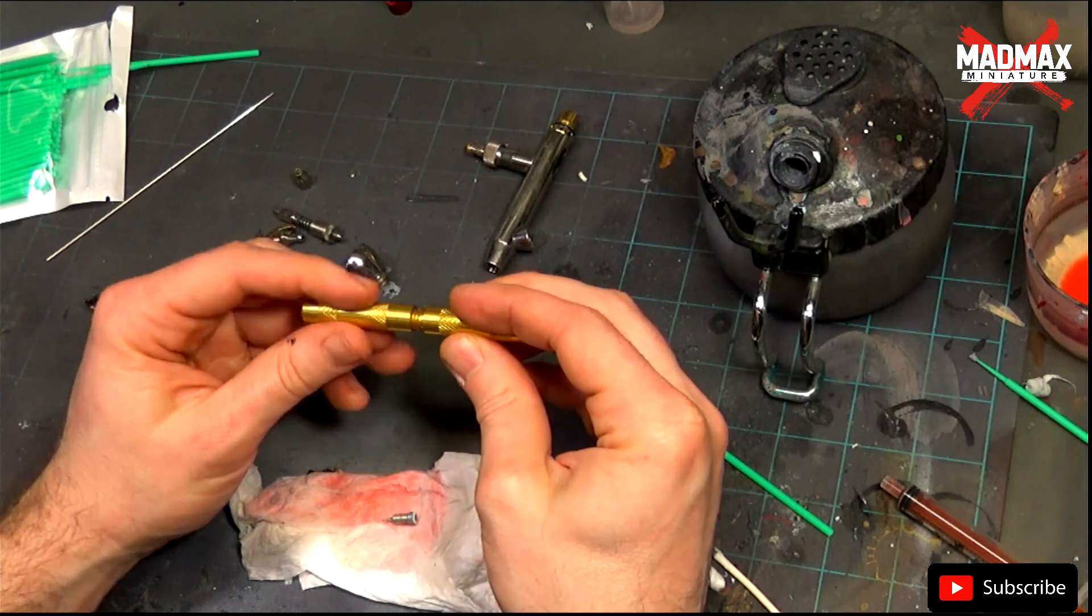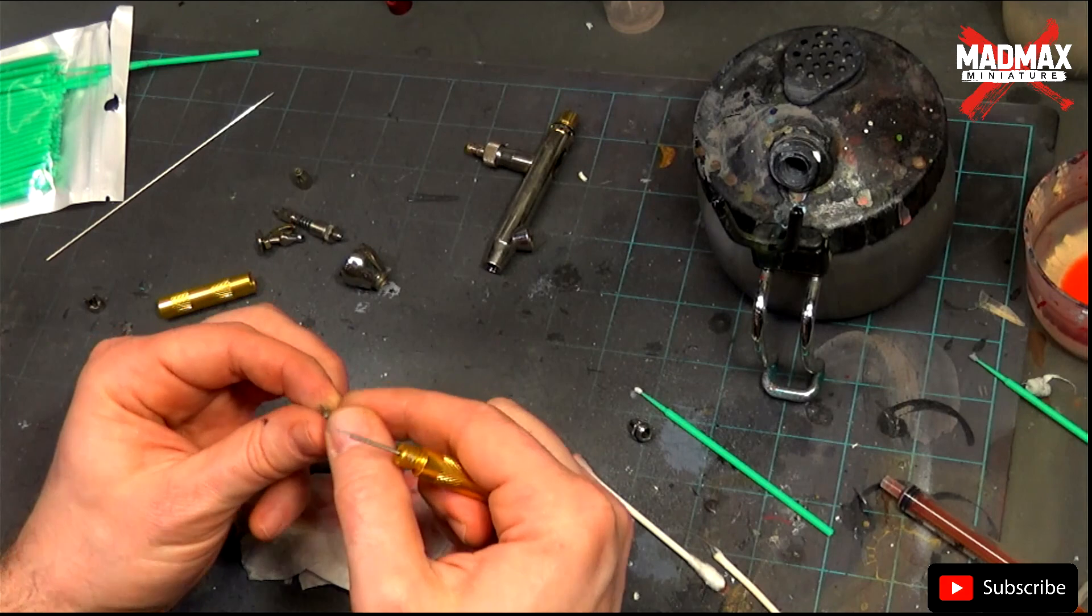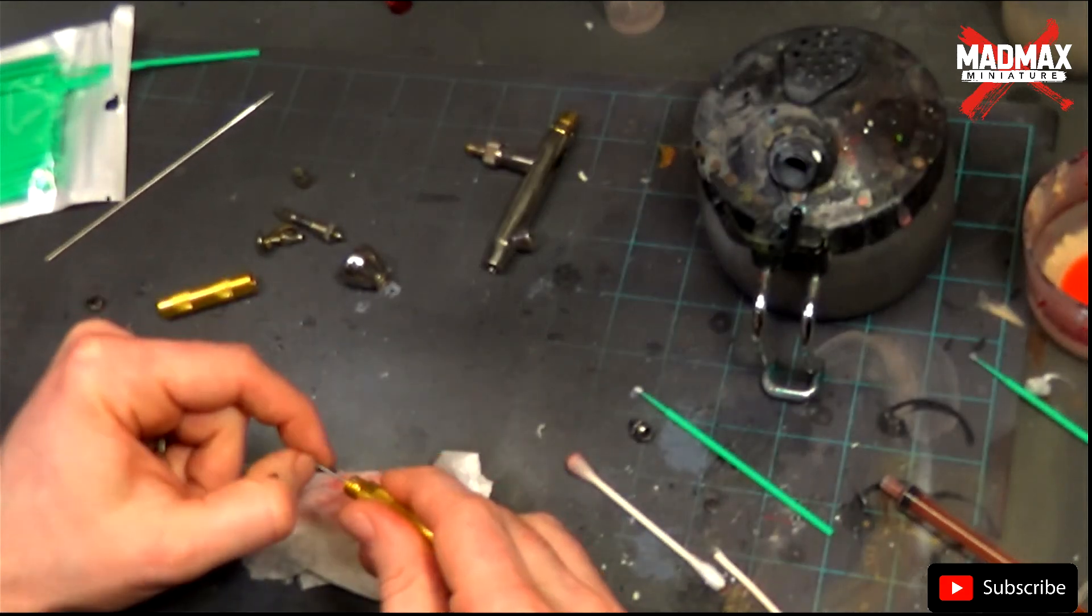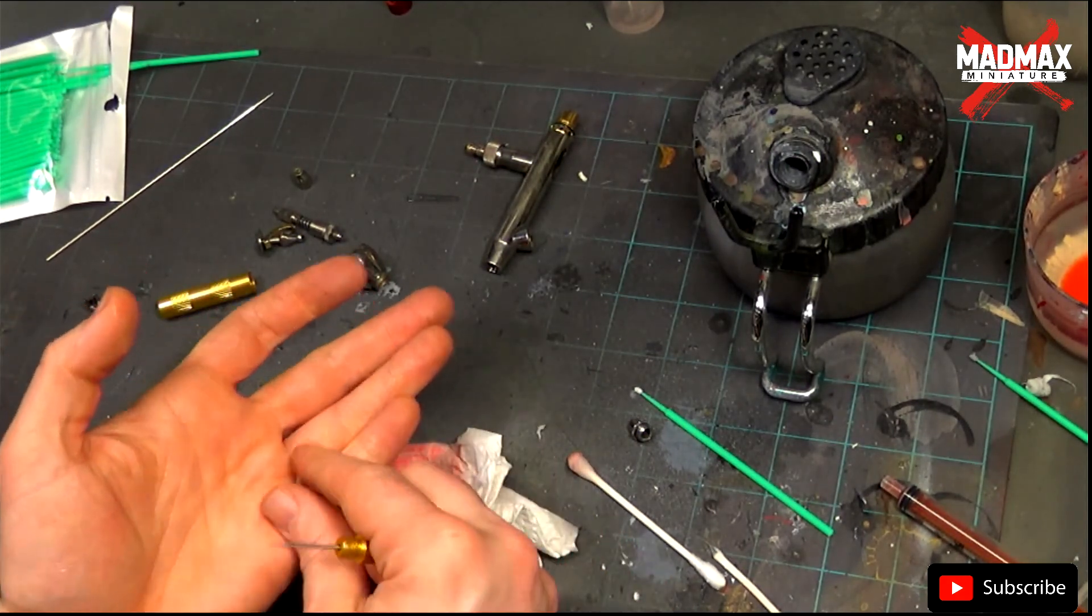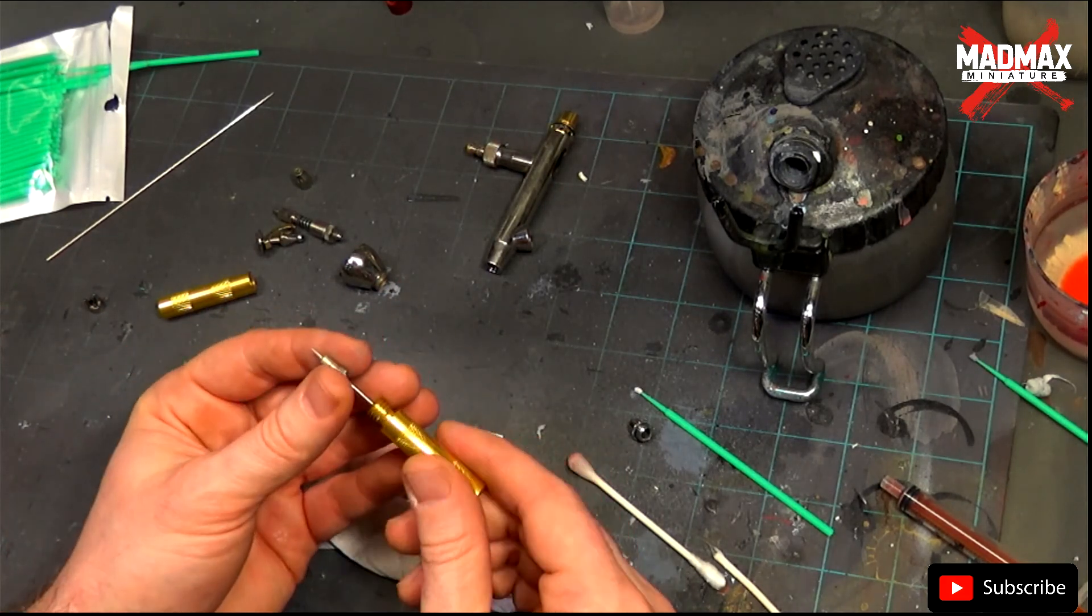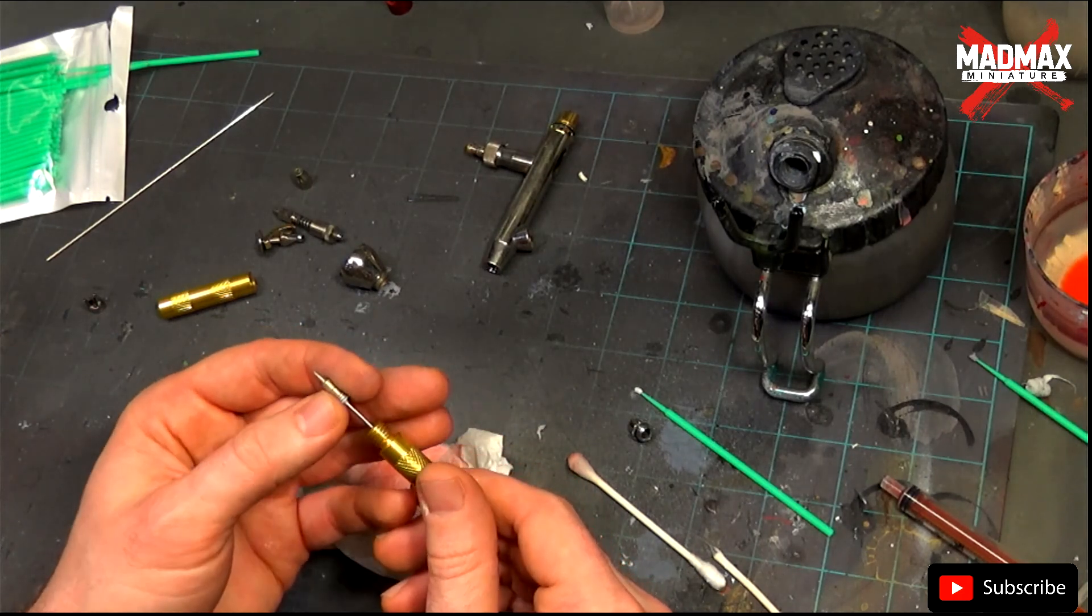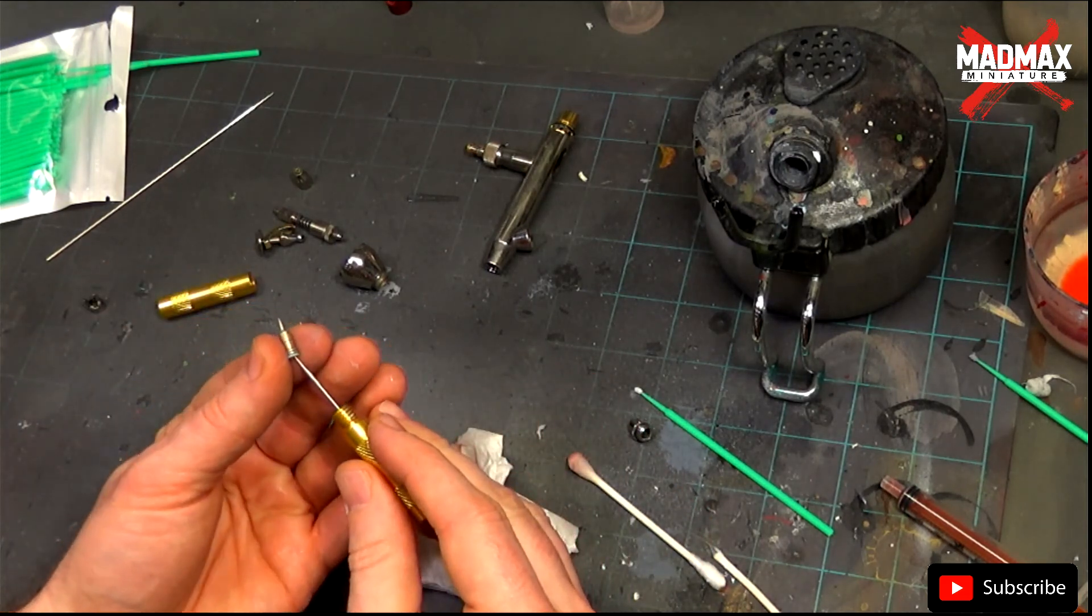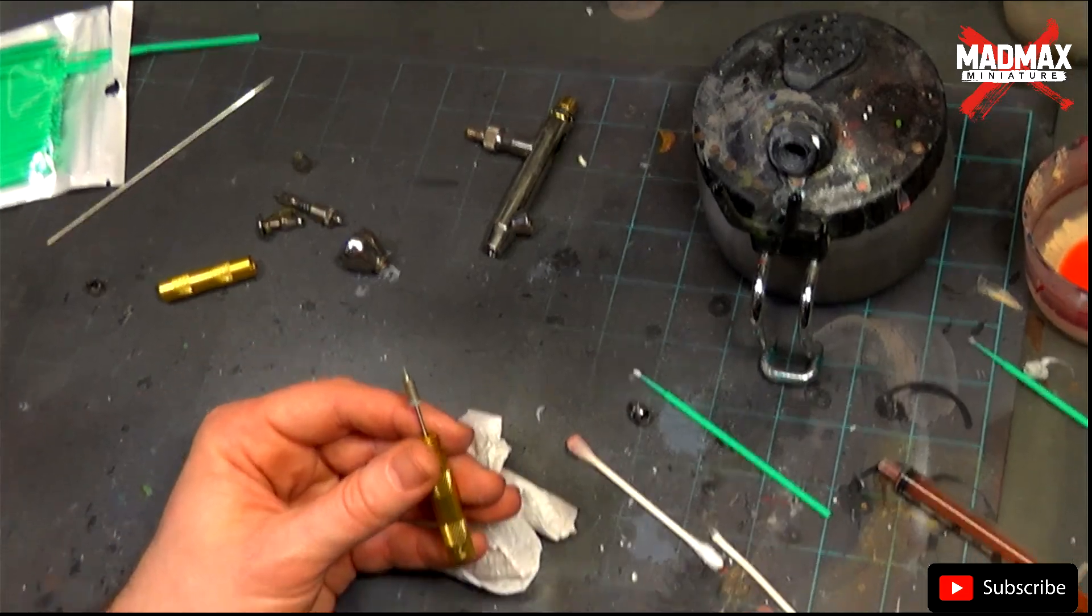I will now use the nozzle cleaner to show you how we use it. So we gently put the nozzle on top of the nozzle cleaner and we twist it slowly on the scraper. Do not apply any pressure because this will break and damage your nozzle. You gently push it and twist. That's it.